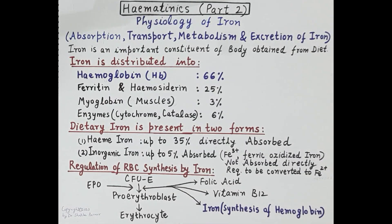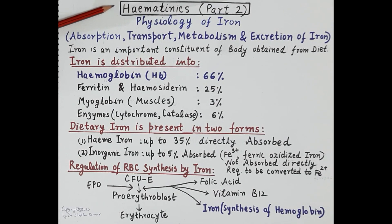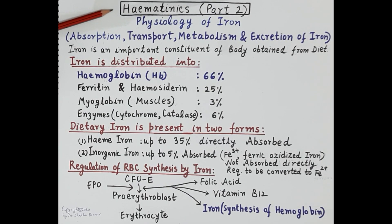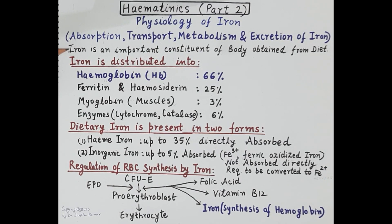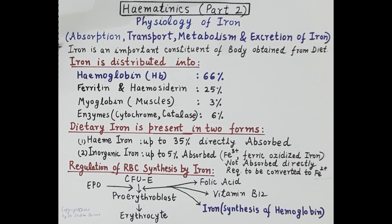This is the second video — Hematinics Part Two — in the series on hematinics. Hematinics are the substances required in the formation of red blood cells, and iron is essential for the synthesis of red blood cells in the bone marrow. Today we are going to discuss the physiology of iron, covering absorption, transport, physiological functions, metabolism, and excretion of iron.